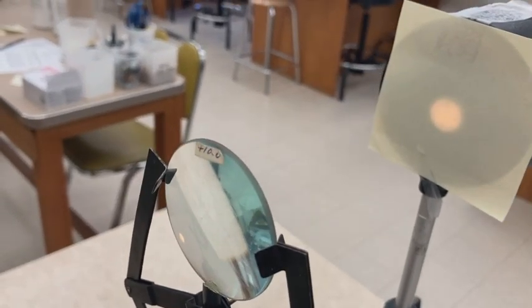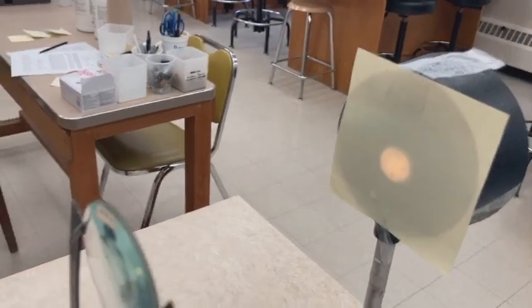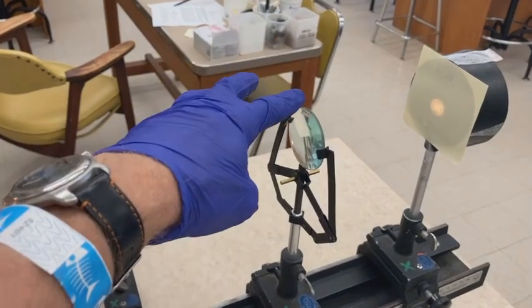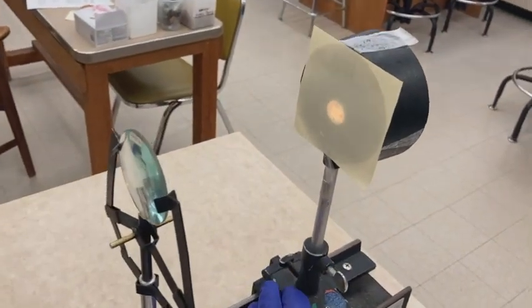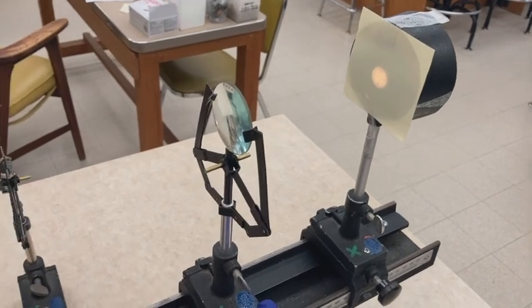In this case, that location is called the far point of the eye because it is unaccommodated. Here we have the light source location, the plus 10 diopter lens, and a clear image on the retina. Remember, this is a myopic eye without accommodation. So this location of the light source is the far point.